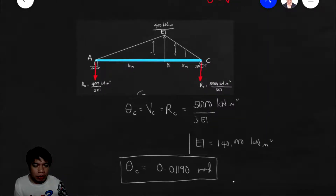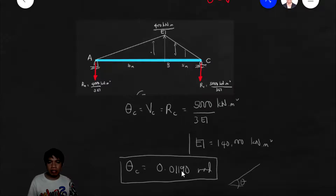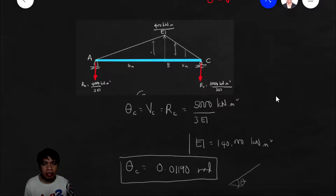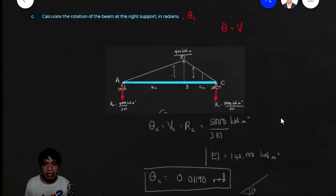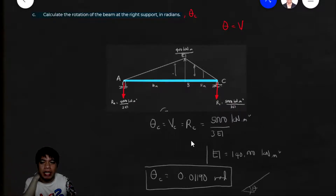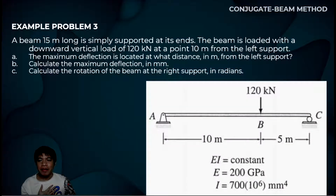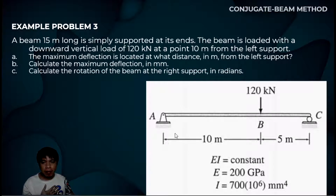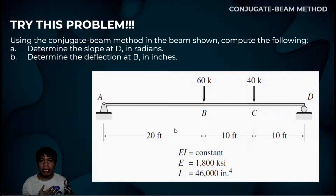That's it. I hope you understood the explanation. Those are the answers to example problem number 3. If you want to try, you can practice this problem using the conjugate beam method — find the slope at D and the deflection at D in inches — good practice for you guys.